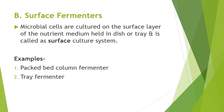Microbial cells are cultured on the surface layer of the nutrient medium held in a dish or tray, generally called a surface culture system or supported growth system. This technique is commonly used for production of citric acid from Aspergillus niger and nicotinic acid. Microbial films can be developed on surfaces of suitable packing medium. Examples of surface fermenters are packed bed column fermenter and tray fermenter.